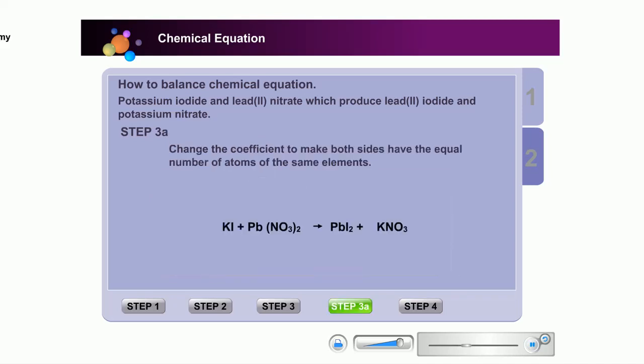There is one iodine atom on the left but two iodine atoms on the right. So, how are we going to make them equal? We need to change the coefficient in front of potassium iodide to 2. By doing so, we are increasing the number of potassium atoms on the right.